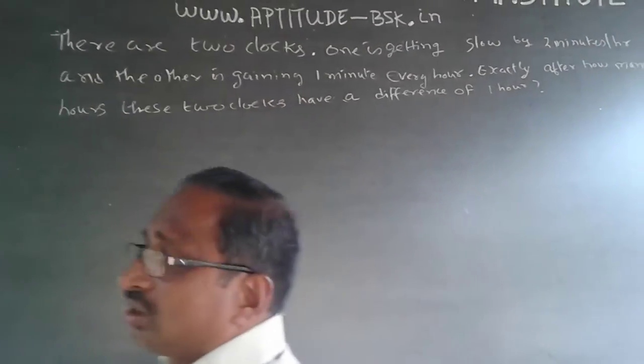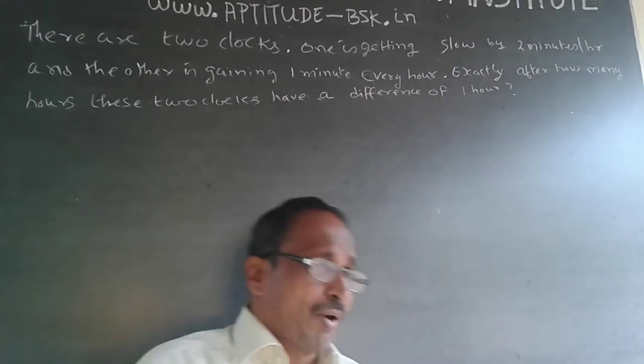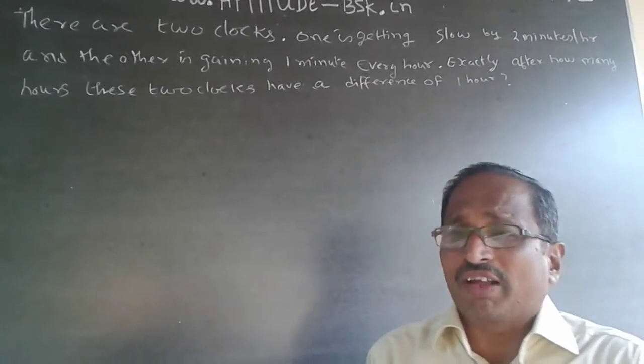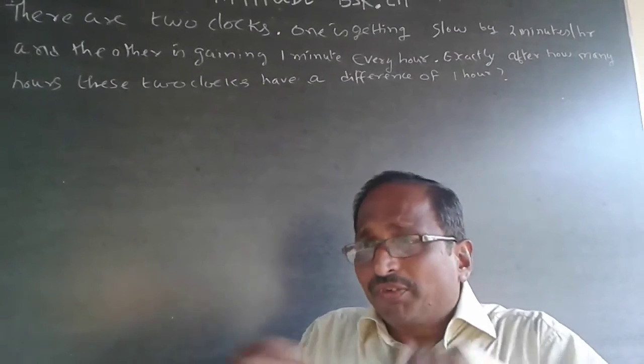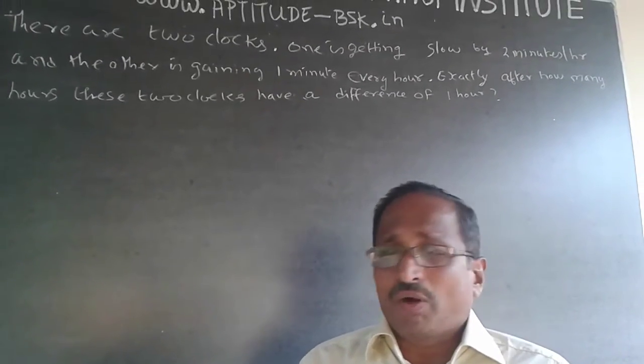What happens is, there are two clocks, one is getting slower by two minutes every hour and the other is gaining one minute every hour. Now, the difference between these two clocks should be one hour.